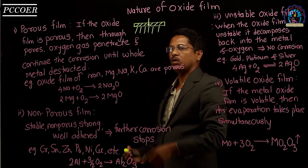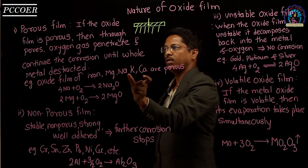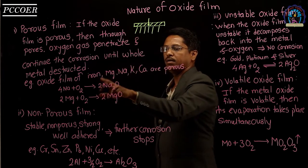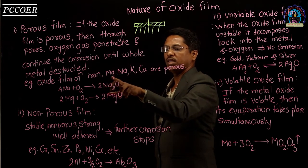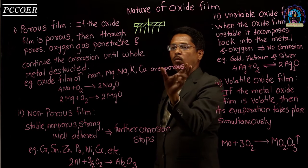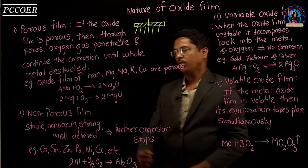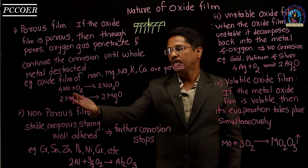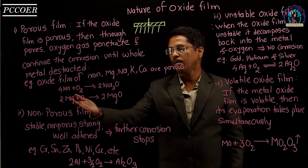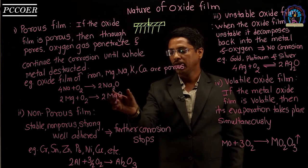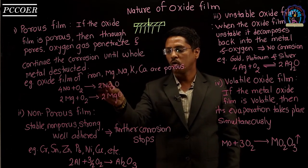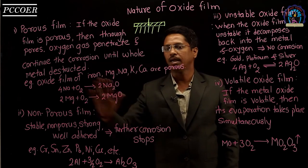Which metals generally form a porous oxide film? Iron, steel, magnesium, sodium, potassium, and calcium typically form porous oxide films. For example, sodium forms sodium oxide and magnesium forms magnesium oxide — both porous in nature. In these cases, corrosion continues and the whole metal gets destructed.